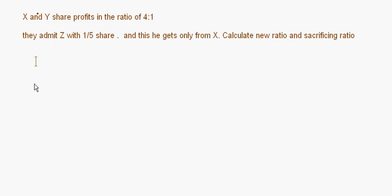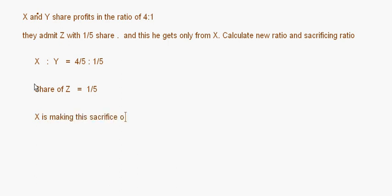In this case, the old ratio of X and Y is 4/5 to 1/5. Z's share is given as 1/5. Since X is making the entire sacrifice of 1/5, the new ratio of X will be 4/5 minus 1/5, which equals 3/5. So the new ratio is: X gets 3/5, Y gets 1/5, and Z gets 1/5, giving a new ratio of 3:1:1.